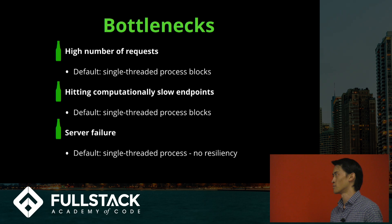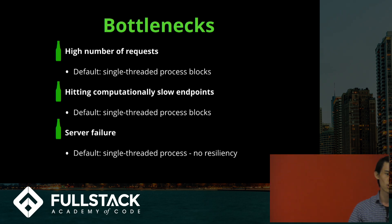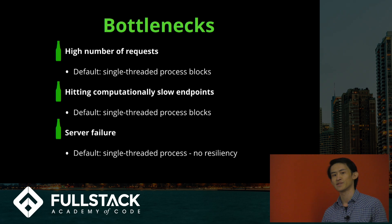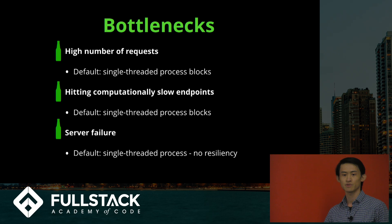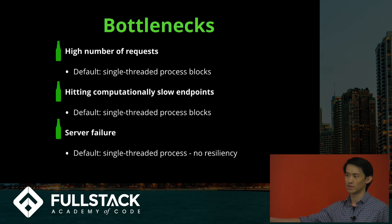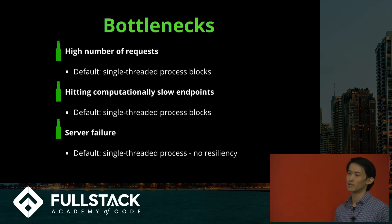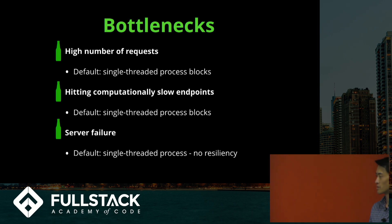Just to review the three bottlenecks: first, high number of requests — by default we have a single-threaded process that's going to block and have a lot of issues processing them. Node does pretty well with concurrency since it farms out I/O operations to the event loop, handled by some threaded process at the OS level. But at the JavaScript level you still have that single thread. For computationally slow endpoints, you'll run into that limit. And with server failure — when it's a single-thread, single-process and it goes down, there's no backup.